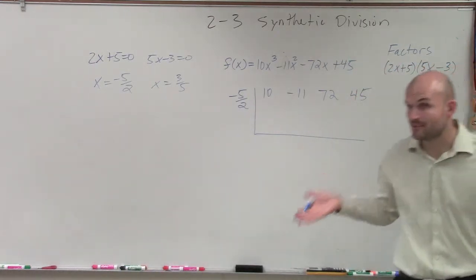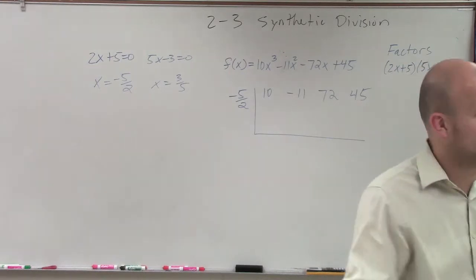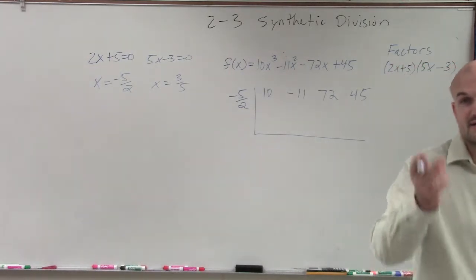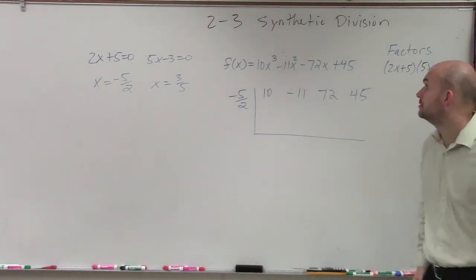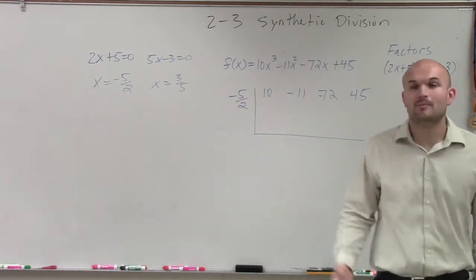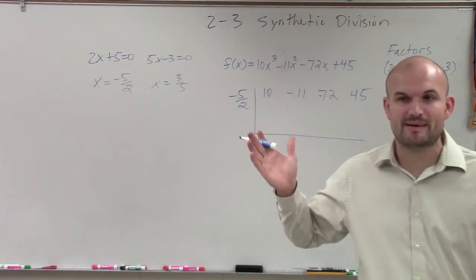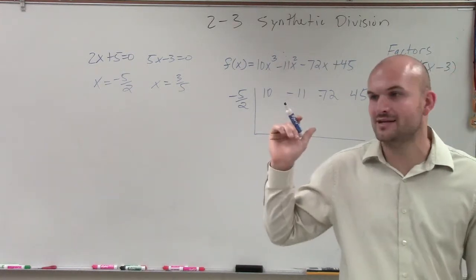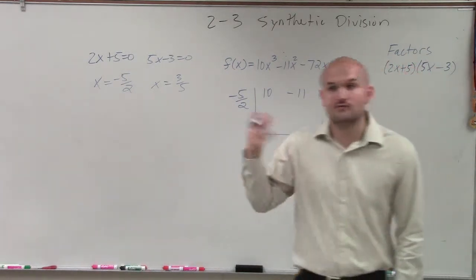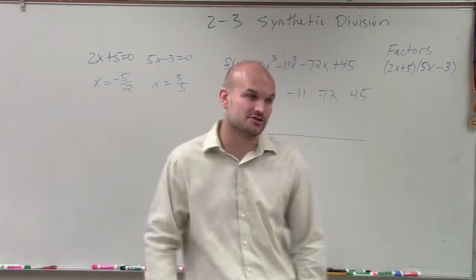Now remember, when applying synthetic division, this better give me a remainder of zero. If I don't get a remainder of zero, then something's wrong. Your 72 should be negative. There you go. So you've got to be very careful. If I would have done the problem and got a remainder of 10, then I would have to go back and say I did something wrong because I was given the factors.